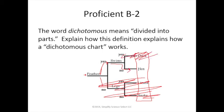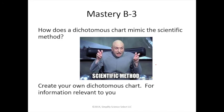Mastery: how does a dichotomous chart mimic the scientific method? It starts with things that are general and asks questions to find more information so we can arrive at an answer — it's a process of discovery. Now try creating your own dichotomous chart for something relevant to you: maybe categorizing your favorite movies, different sports, a list of different books, or characters. As long as you have a bunch of options to end with and each question narrows down the possible answers, it'll be a good dichotomous chart.